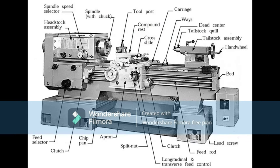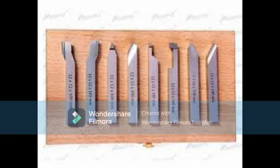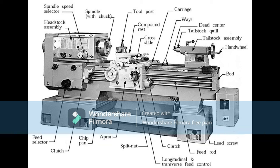The main components of a bench lathe include the bed, which provides support for the other components; the headstock, which houses the motor and drive system; the tailstock, used to support the other end of the workpiece; the cutting tool; the carriage, which holds the cutting tool and moves along the bed; the cross slide, which allows the cutting tool to move perpendicular to the bed; and the lead screw, which converts rotary motion into linear motion for the carriage and cross slide.